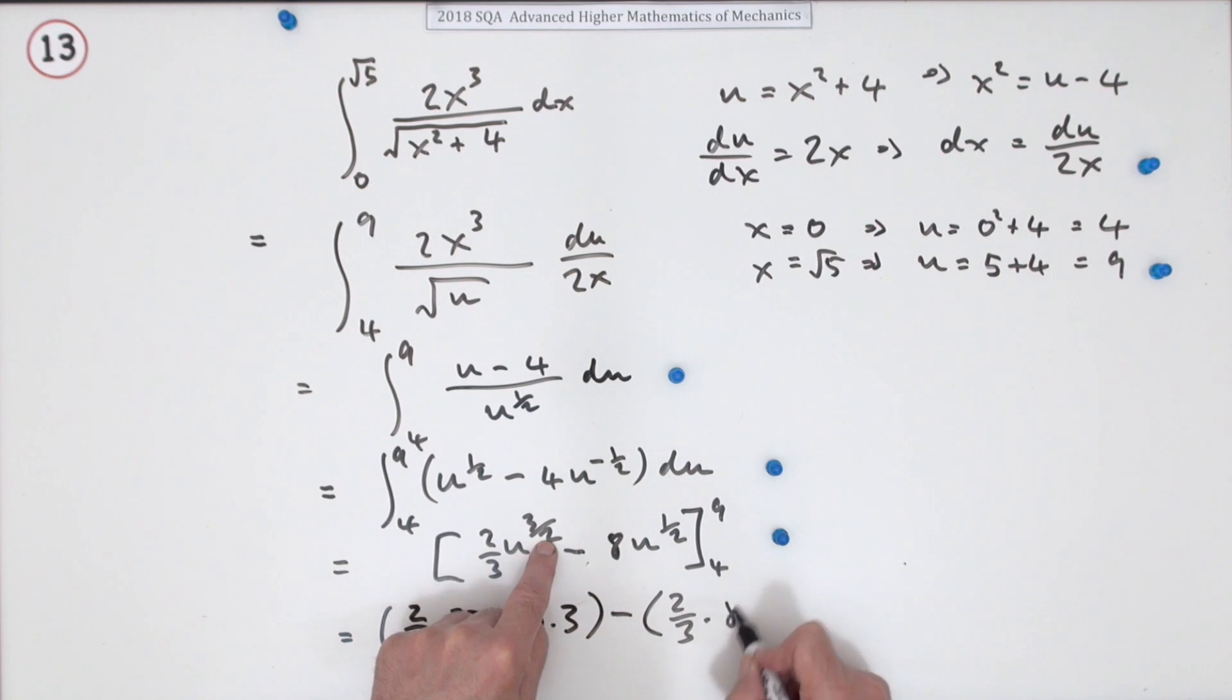You've got 2/3 and 2/3, so it's 2/3 of (27 - 8), which is 2/3 of 19 = 38/3. Then -8√3 + 16, which simplifies to 14/3. Or you could just put it in your calculator to get that final mark.